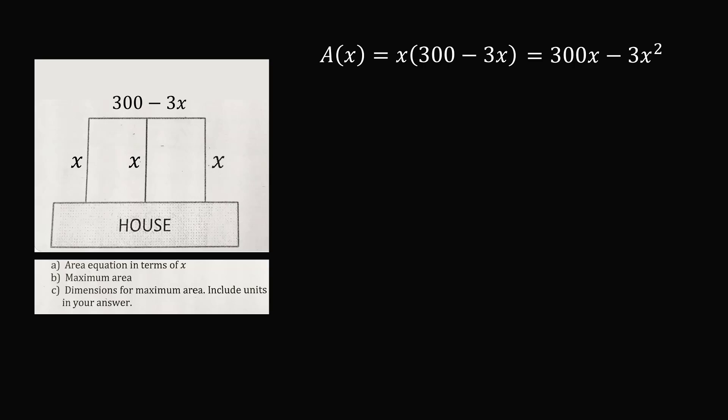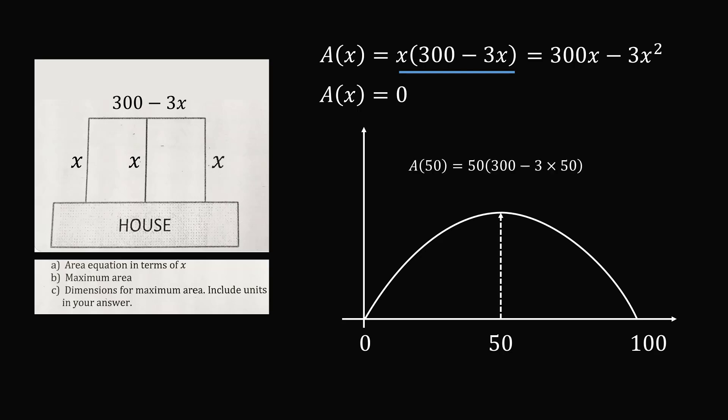Part b, we need to find the maximum area. The graph of this function will be a parabola, and it will look something like this. One way to approach this question is to solve for the x-intercepts. This will be where the area is equal to 0. We can readily solve this equation, because we know 0 will be equal to x times (300 minus 3x). We can set each of these terms equal to 0. So one case is x is equal to 0, and the other case is 300 minus 3x is equal to 0, which will give x is equal to 100. By symmetry of the parabola, the vertex will be at the midpoint of the x-intercepts, and that will be the point x is equal to 50. The maximum area can be found by substituting x is equal to 50 into the area equation, and this gives the result that the area is 7,500 square feet.